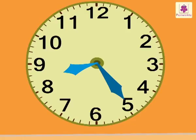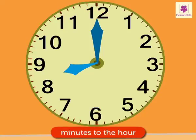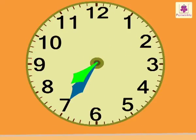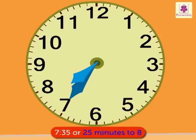Now, when the minute hand is between 6 and 12, it shows the minutes to the hour. The hour hand is between 7 and 8, and the minute hand is on 7. So we read this as 7:35 or 25 minutes to 8. We write it as 7:35 or 25 minutes to 8.